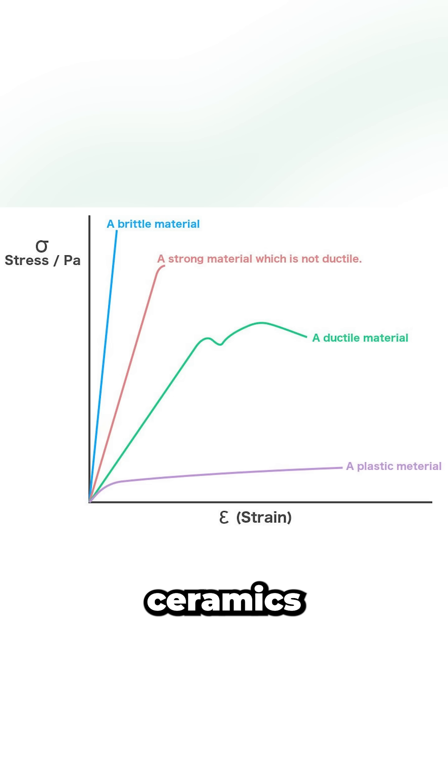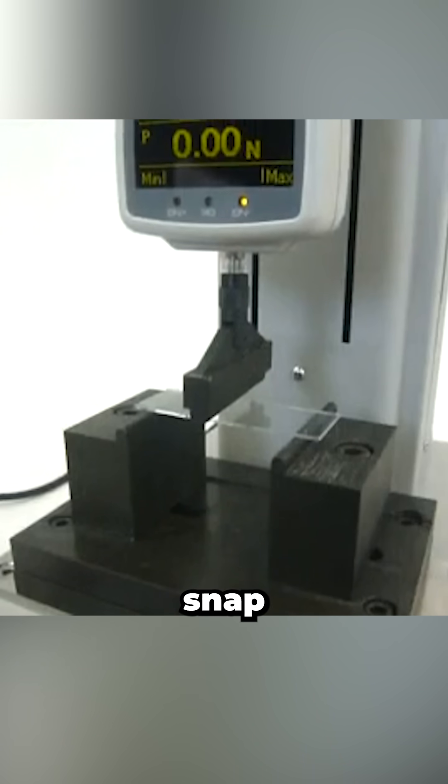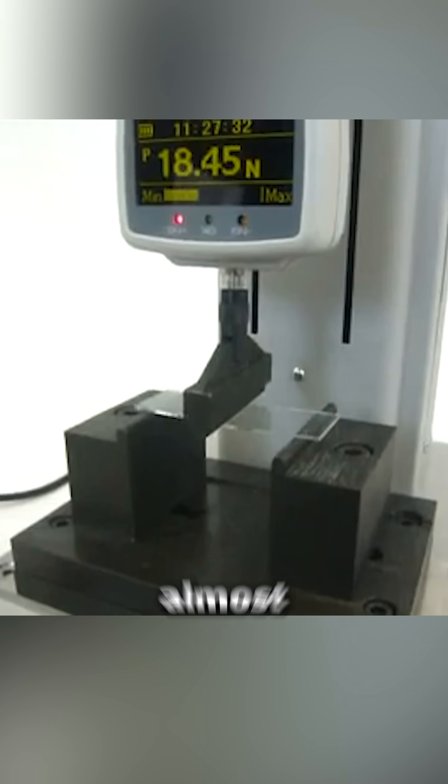Brittle materials like glass or ceramics usually don't do this. They crack or snap shortly after the elastic region with almost no warning.